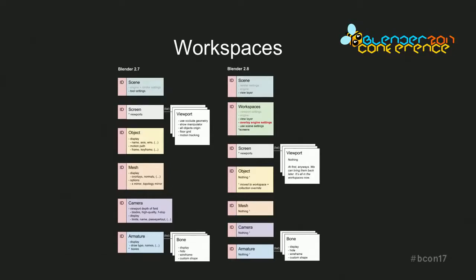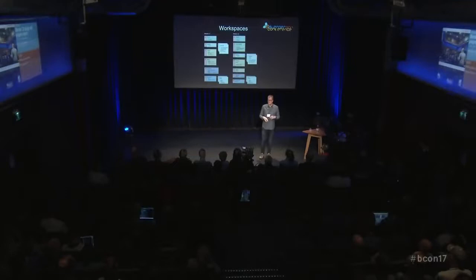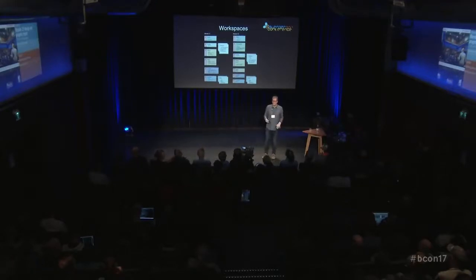What you have to get used to — and this is already working in Blender — is that the mode, for example the drawing mode and editing mode, is going to be a global thing. You set that in the top bar instead of in the viewport. The top bar shows you're in edit mode — mesh edit mode — and that mode will be more persistent. If you select another object, it simply goes to edit mode. You can go to another workspace in animation pose mode, switch, and always have pose mode ready for the characters, then switch back and have edit mode ready.